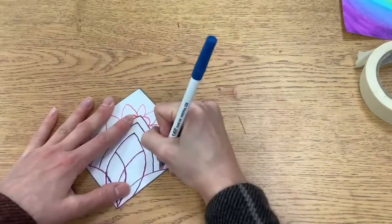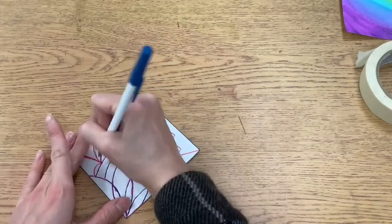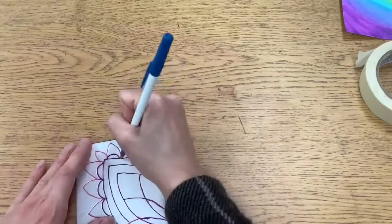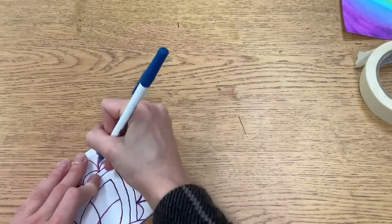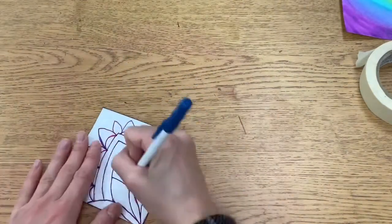We want to make sure those lines are nice and deep into our printing plate because when we print it, those are the lines that will show through to our background paper. Those lines will appear white when we print it.